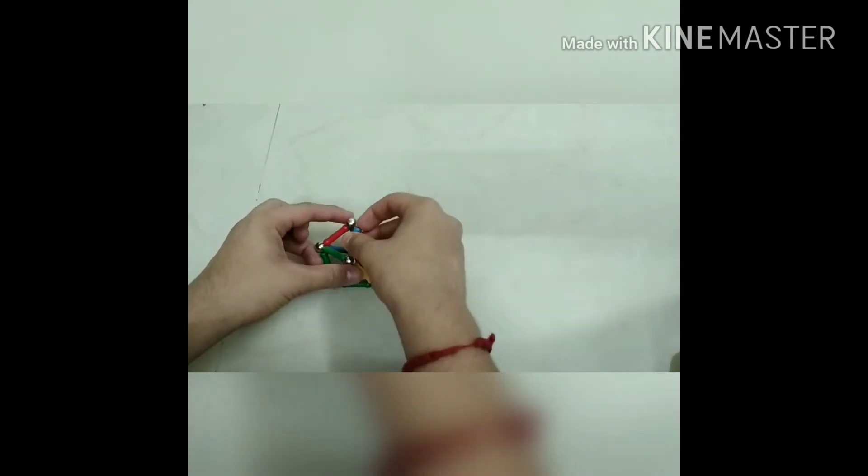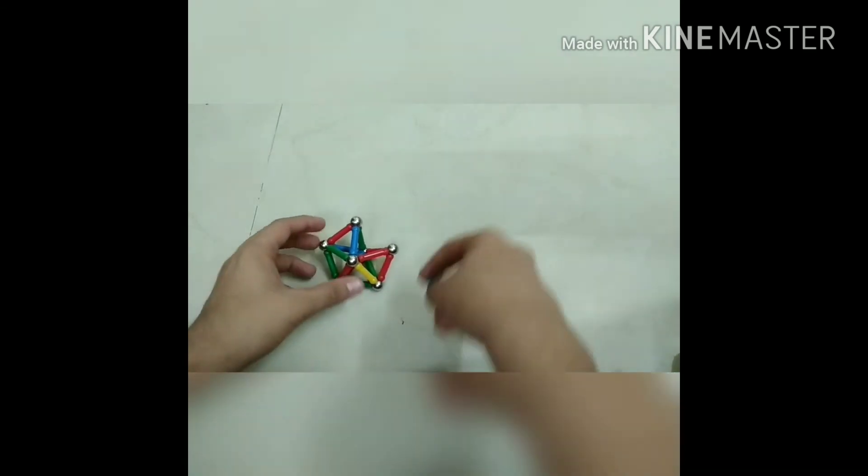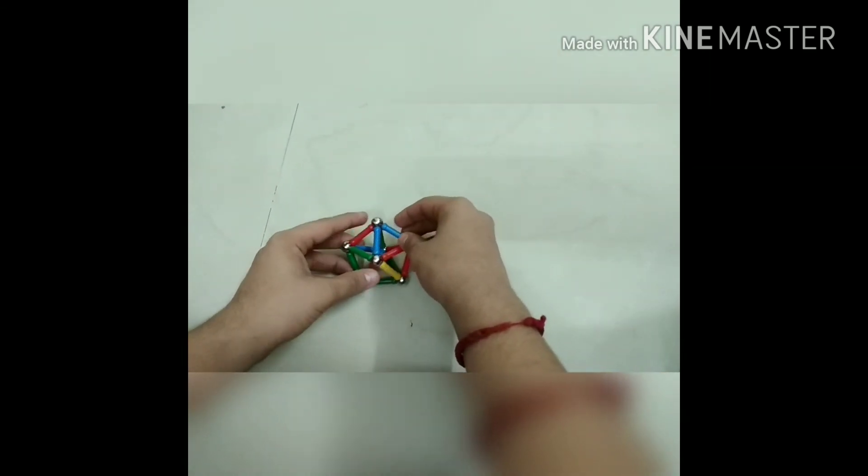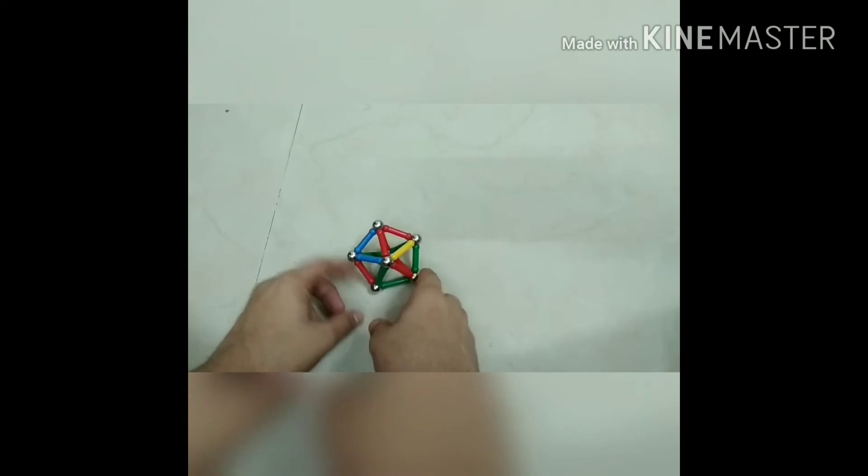We will pull up the last one, connect it as well, and here we will connect the last magnetic stick to make our 3D pentagon which is up and about.